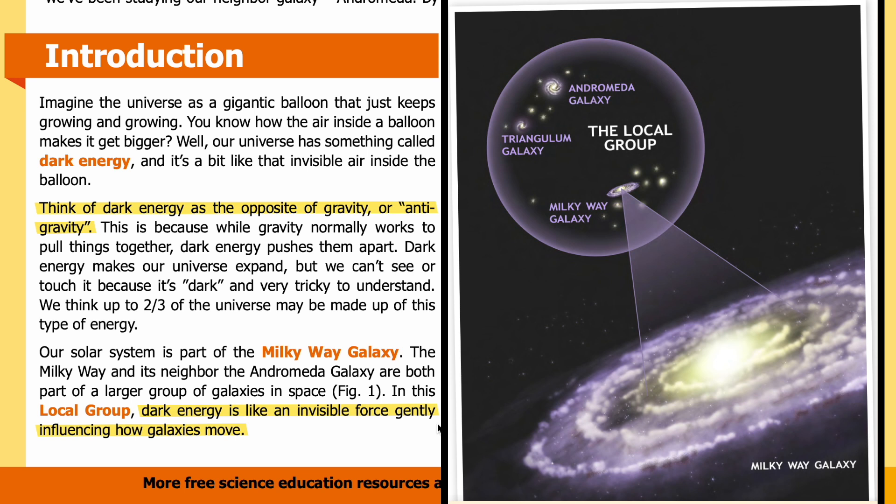In the image, you can see the Local Group galaxies circled in the upper left corner. The Milky Way galaxy is magnified in the lower right corner of the image.